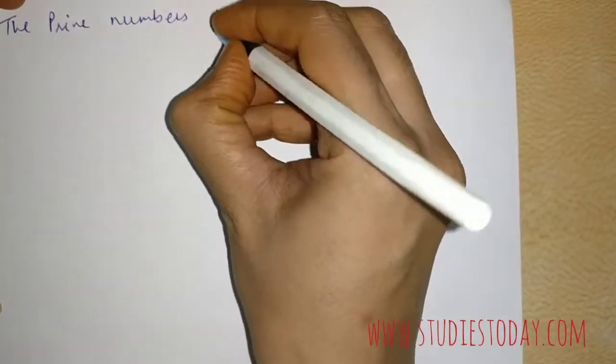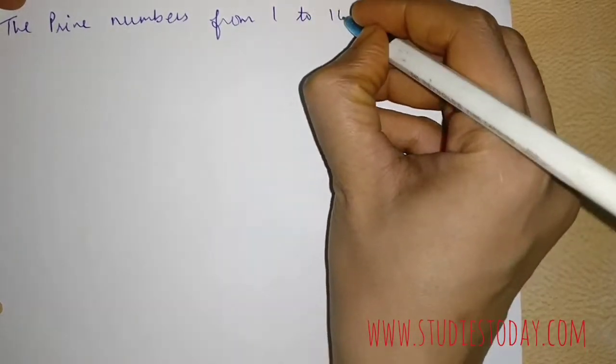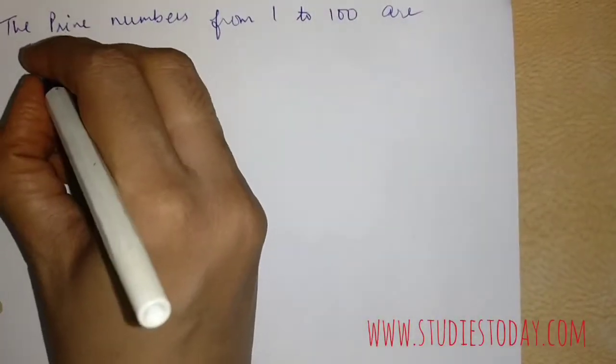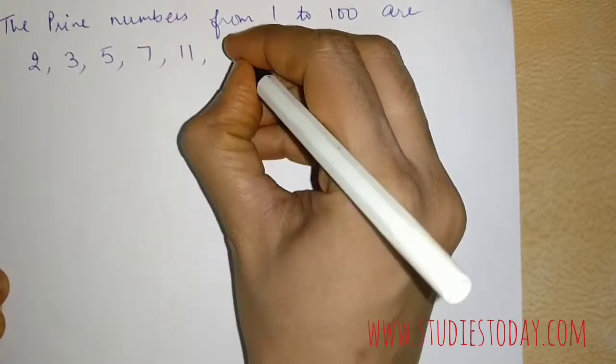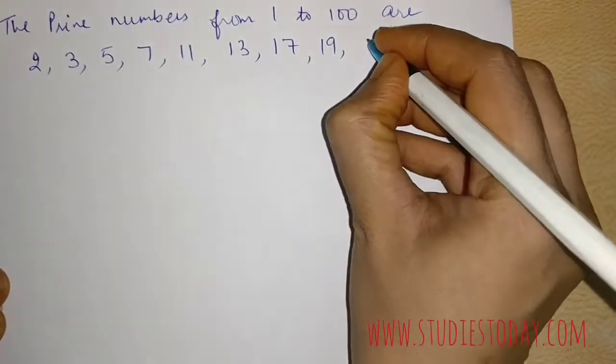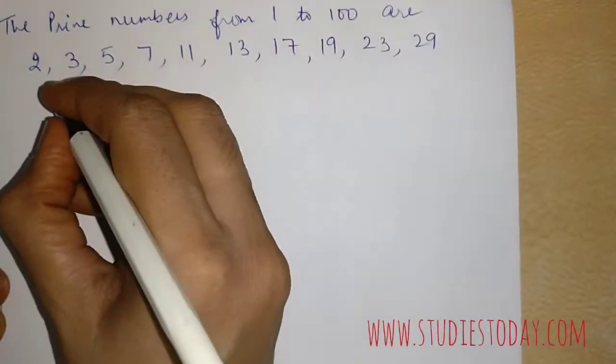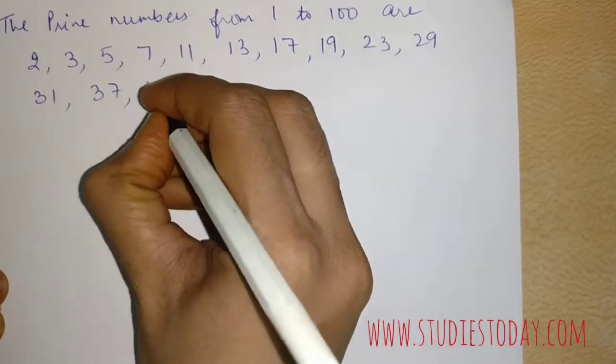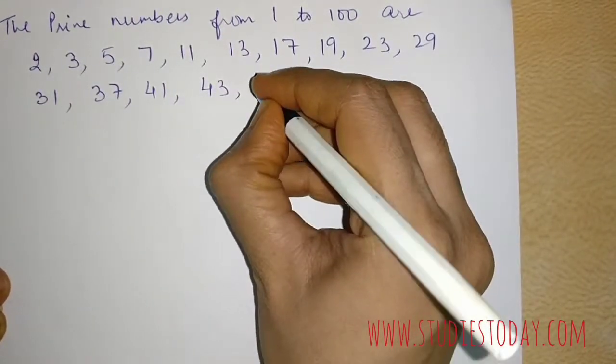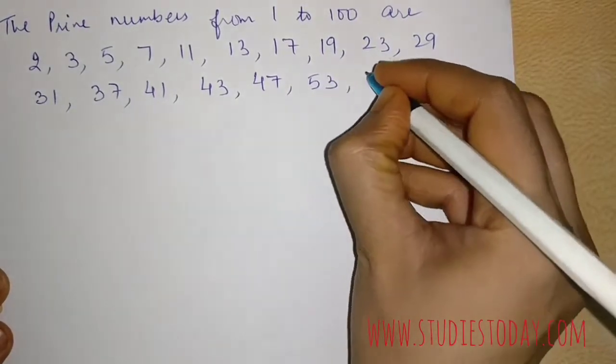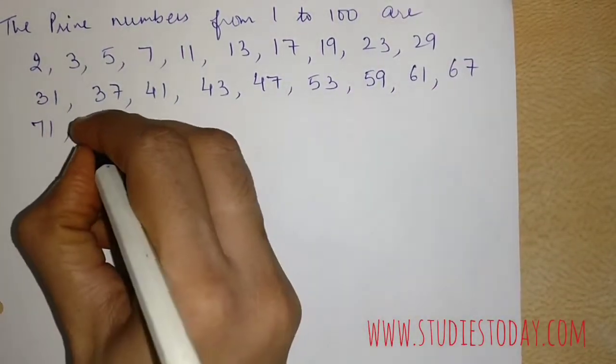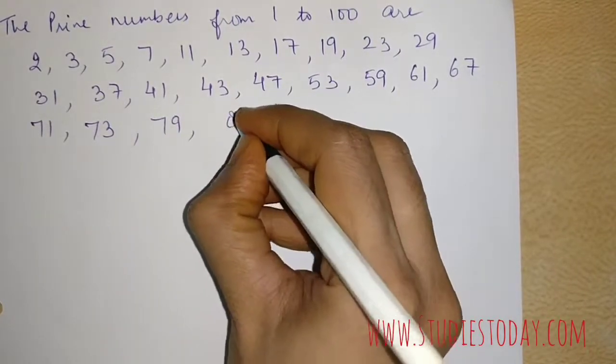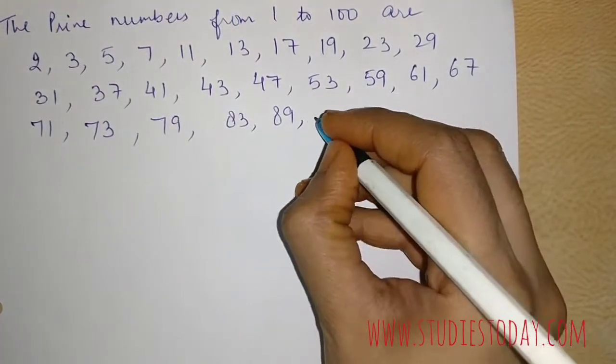Now we'll pen down all these numbers, the prime numbers from 1 to 100 are: 2, 3, 5, 7, 11, 13, 17, 19, 23, 29, 31, 37, 41, 43, 47, 53, 59, 61, 67, 71, 73, 79, 83, 89, and 97.